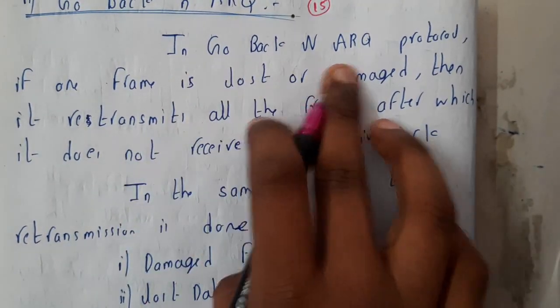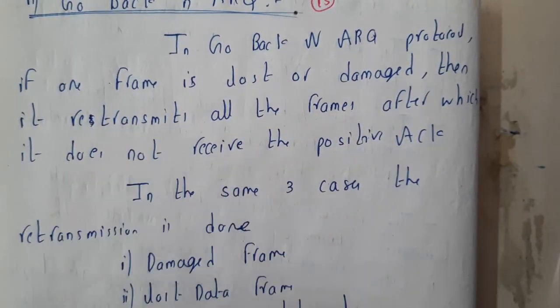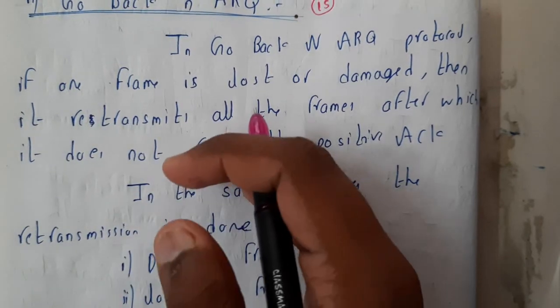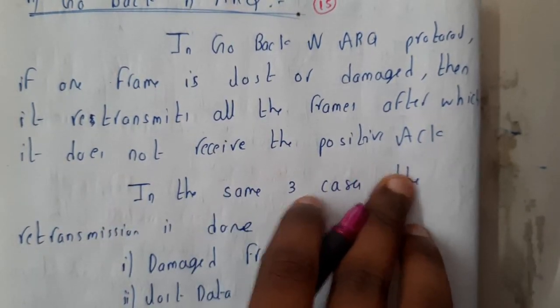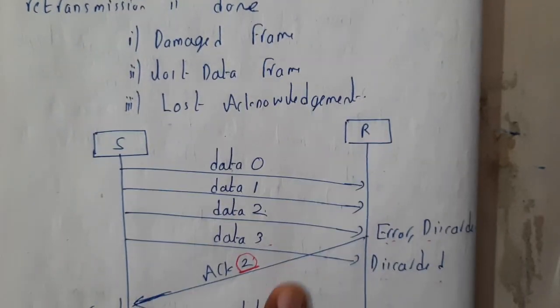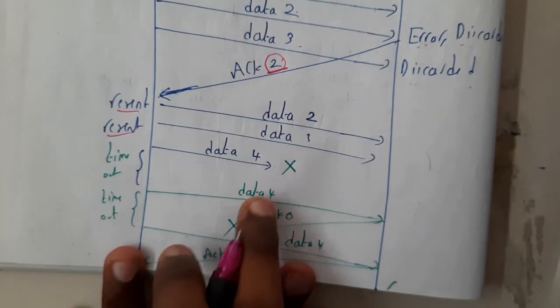In Go-Back-N ARQ protocol, if one frame is lost or damaged, then it retransmits all the frames after which it does not receive the positive acknowledgement. So the next frames will also be sent. So I hope everyone got a small idea. If this question comes for 5 marks, please explain separately about...